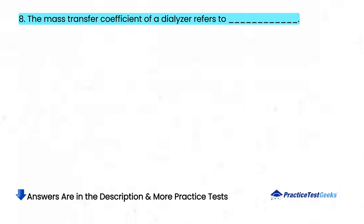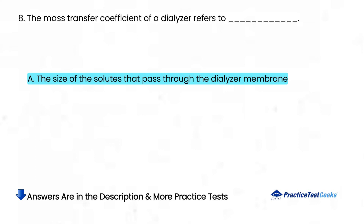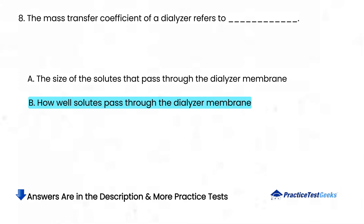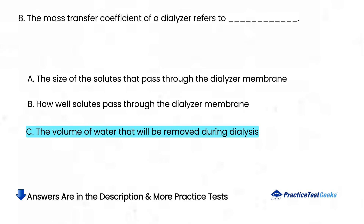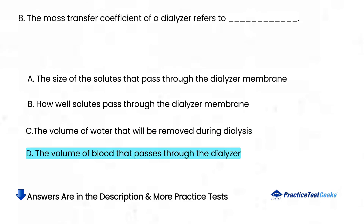The mass transfer coefficient of a dialyzer refers to: A. The size of the solutes that pass through the dialyzer membrane. B. How well solutes pass through the dialyzer membrane. C. The volume of water that will be removed during dialysis. D. The volume of blood that passes through the dialyzer.